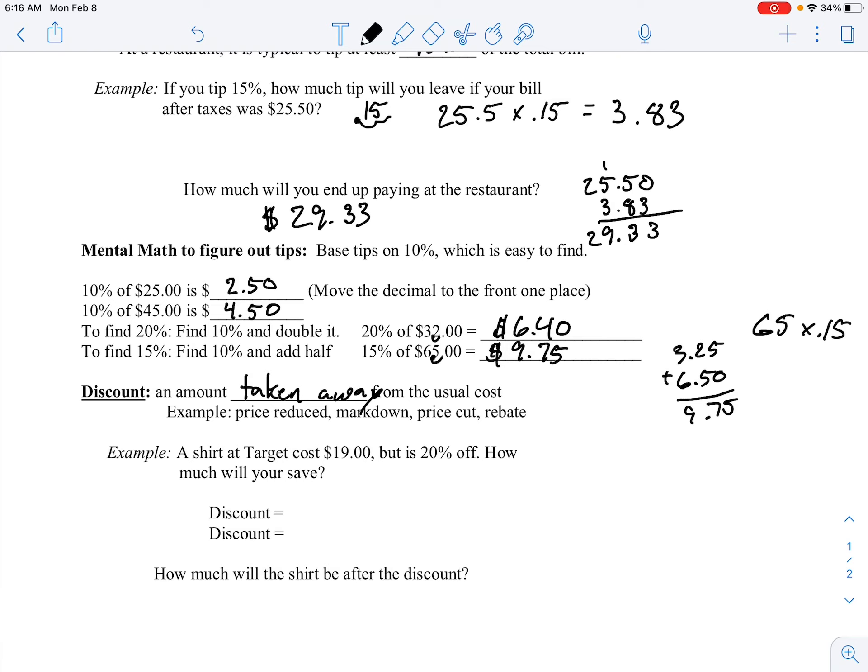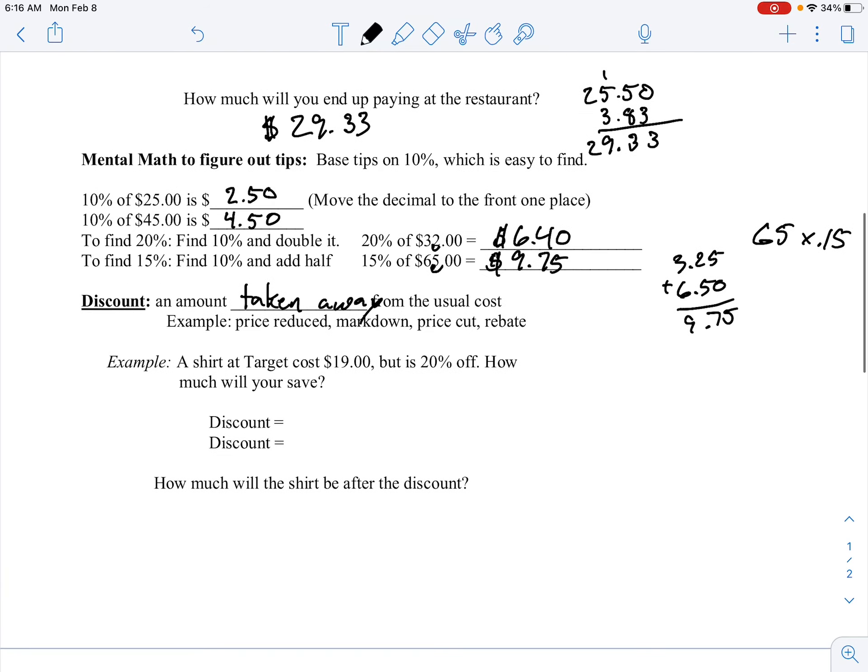So a t-shirt at Target costs $19 but is 20% off. How much will we save? Well, we just got to figure out what 20% of 19 is. So 10% of 19 is going to be $1.90. And then to figure that out, we just times it by 2. So 20% of this $19 will be $3.80. So my discount is $3.80.